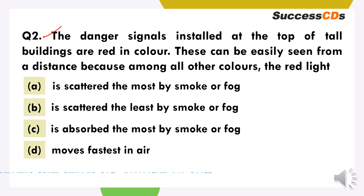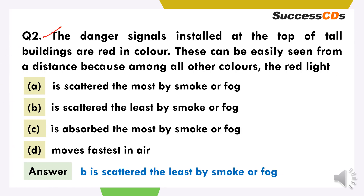The danger signals installed at the top of tall buildings are red in colour. These can be easily seen from a distance because among all the other colours, the red light is scattered the least by smoke or fog. Red colour sab se hi less scattered hota hai, jiski wajay se door tak dikhai deta hai.